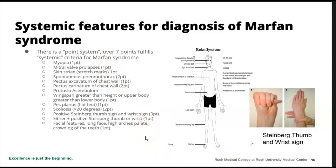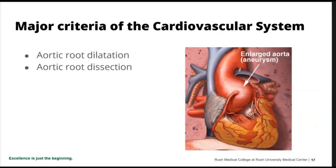Facial features include a long face, a very high arch to the palate, and crowding of the teeth. One of the questions I ask is: did you need braces, and before you got braces, how many teeth did they have to pull out — wisdom teeth don't count. That long neural palate results in crowding of the teeth, so often before braces they need four or five teeth removed, which isn't normal.